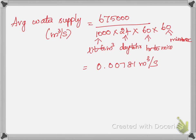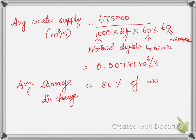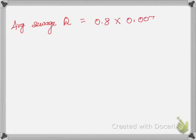Generally, about 80% of the water supplied is converted into wastewater. So our assumption is that average sewage discharge equals 80% of water supplied. Therefore, average sewage discharge Q = 0.8 × 0.00781 = 0.00625 m³/s. We assume this to be our dry weather flow.